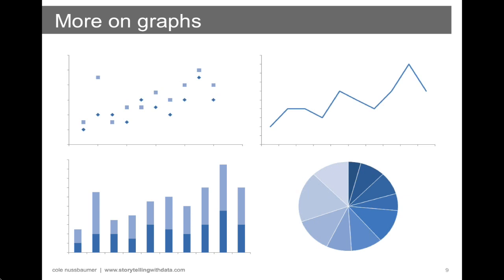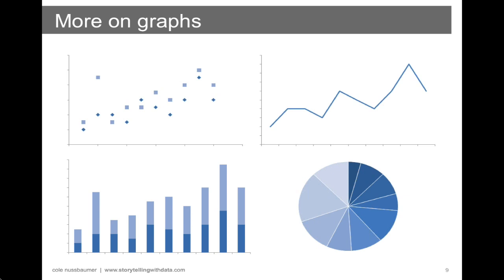Pie charts and area charts in general — people's eyes have a hard time attributing quantitative data to that two-dimensional space, so when you use them make sure you provide labels to help your audience interpret them. My personal opinion is that 3D should never be used in charts. 3D adds a lot of complexity that doesn't bring any value. I like to say there are very few rules in data visualization, but one of those rules is: don't use 3D.